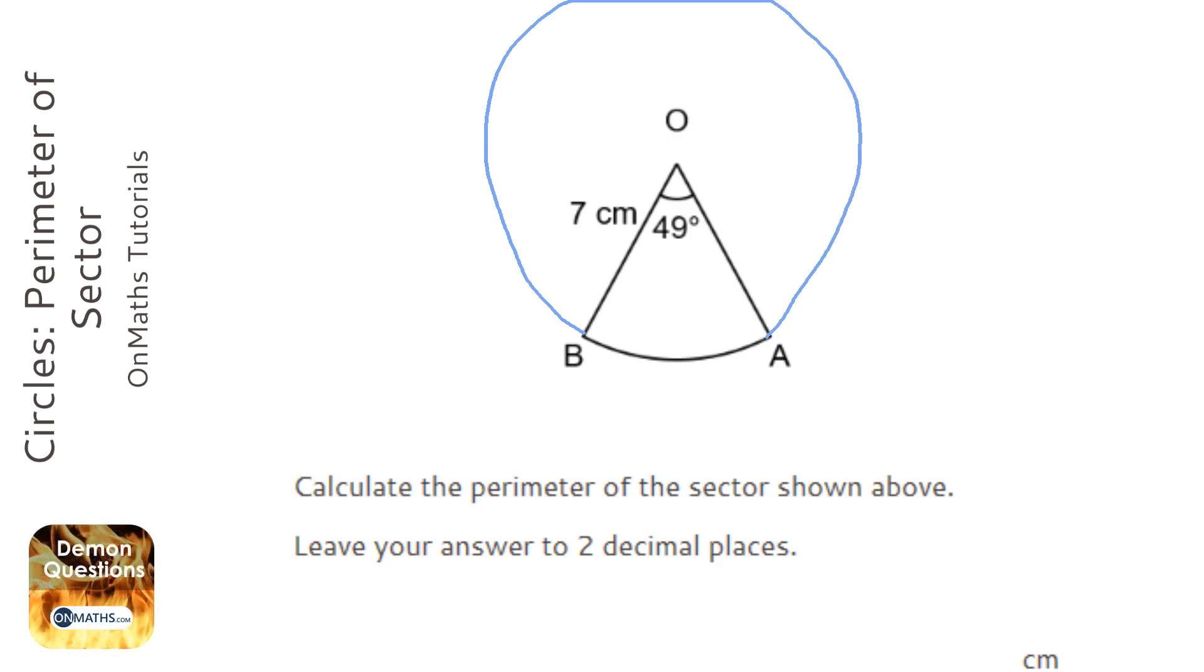Now it asks us for the perimeter. Now there are three parts to the perimeter. There's this 7cm here, there's 7cm here, and this what we call an arc here.